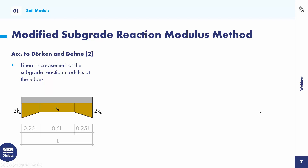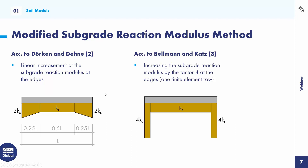To reduce the deficiencies of the subgrade reaction modulus method, there are different approaches. For example, according to Durkan and Dana, they suggest to increase the modulus at the edges — it's 2 times Ks — with a linear increase in the quarter zone. Another approach is according to Bellmann and Katz, who suggest to increase the subgrade reaction modulus by a factor of 4 at the edges, using one finite element row.